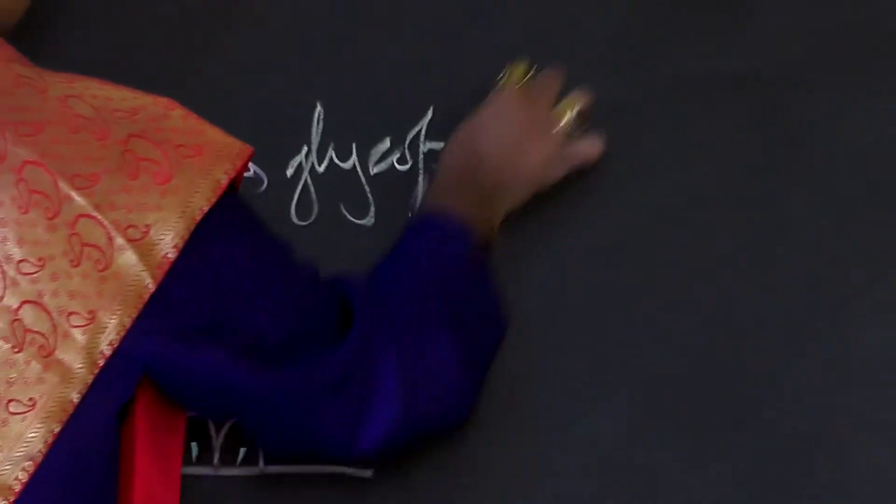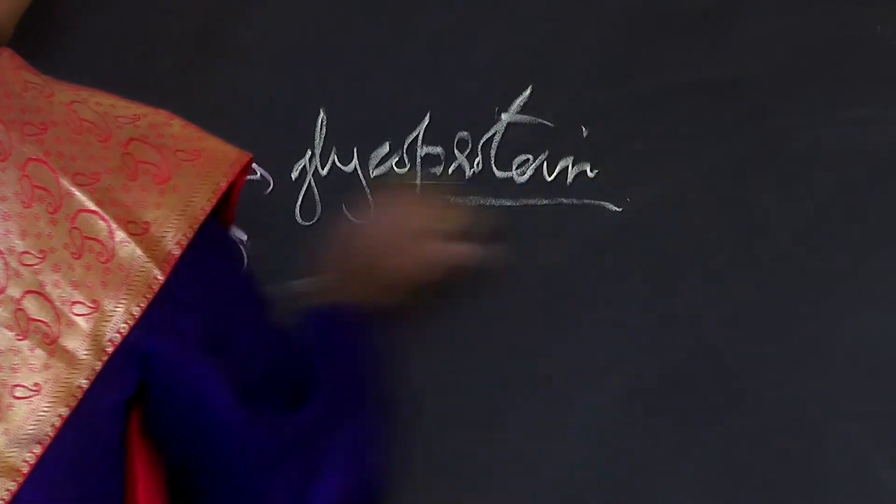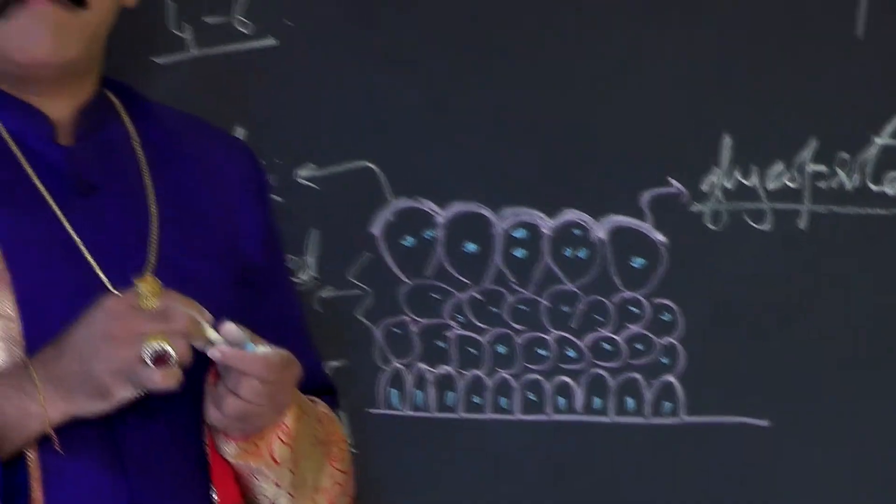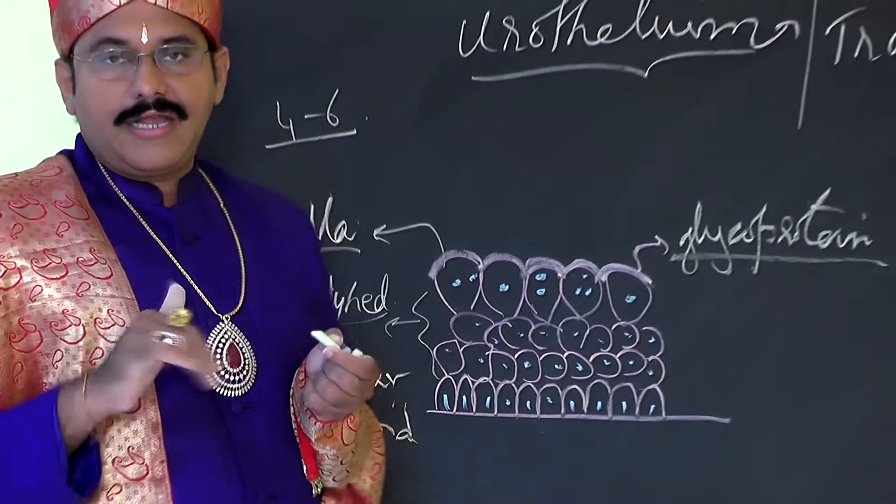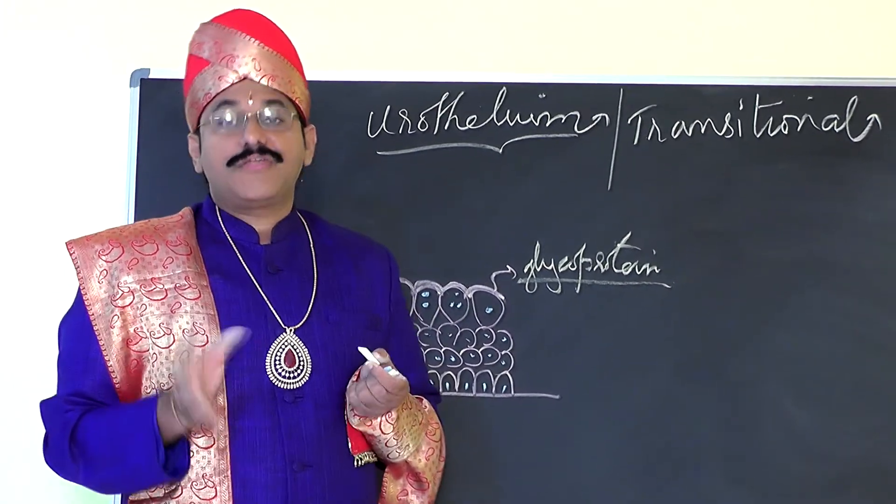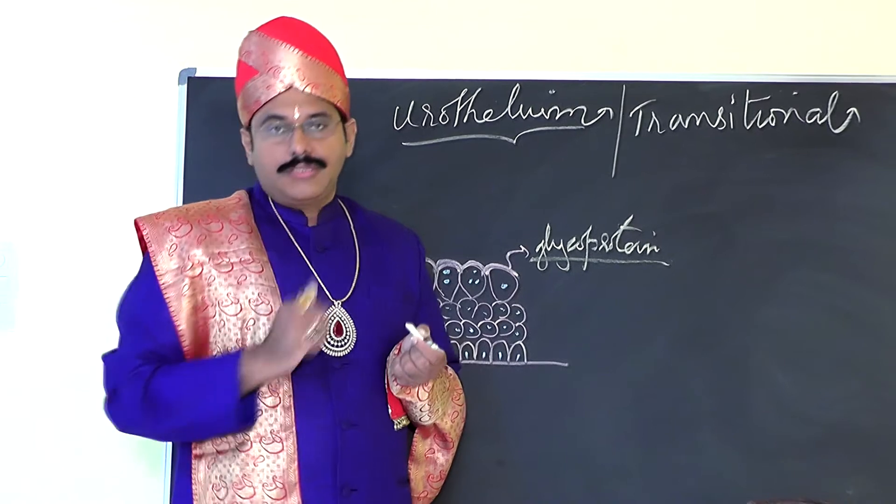When you see under electron microscope, you can see this special glycoprotein makes the membrane impervious and resistant to the harmful and toxic effects of urine.